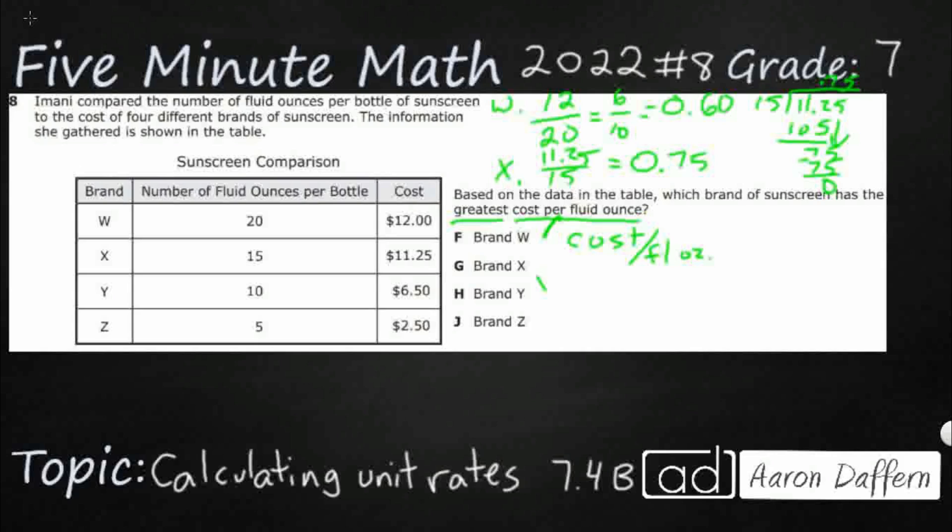Let's just keep going to brand Y here. Brand Y, cost per fluid ounce, 6.5 over 10. Alright, I know when you divide by 10, that's 6.5 tenths. You can do 0.65 tenths. Or what you do is you just take this 6.5 and you divide by 10. You just move the decimal over once to the left. Either way, that's our Y. So right now X is still our largest. That was kind of easy here.